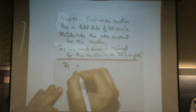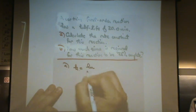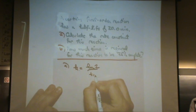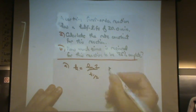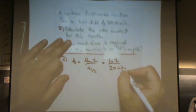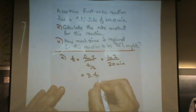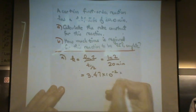Well, for A, the rate constant for a first order, that would be natural log of 2 over the half-life. Or natural log of 2 over 20 minutes, I'll just leave it in units of 1 over minutes and that will be 3.47 times 10 to the minus 2 per minute.